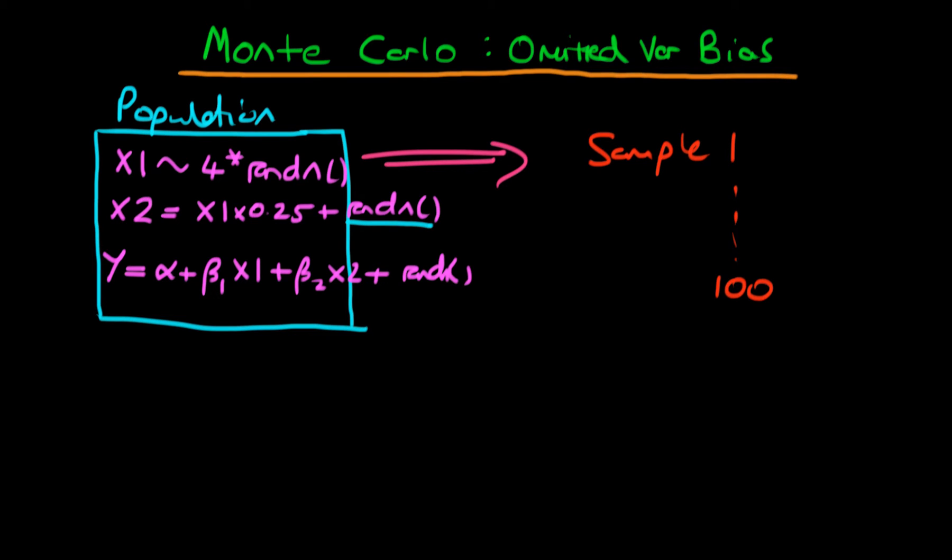And then what we're going to do is we're going to use least squares estimators on each of these samples in order to come up with the least squared estimates of beta 1. So we're going to be looking at beta 1 hat. But in contrast to the previous examples, what we're actually going to do is we're going to estimate a regression model on each of these samples, which is just Y is equal to alpha plus beta 1 times X1 plus some error, epsilon.